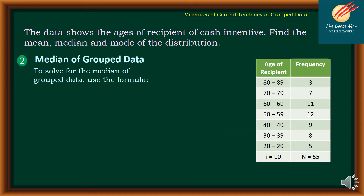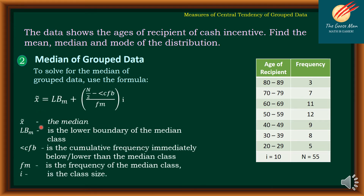Let's move on to the median of the grouped data. The formula is: median = LB_m + ((N/2 − less than cfb) / f_m) × i, where LB_m is the lower boundary of the median class, less than cfb is the cumulative frequency immediately below the median class, f_m is the frequency of the median class, and i is the class size. The class size is 10, and the total frequency N is 55.